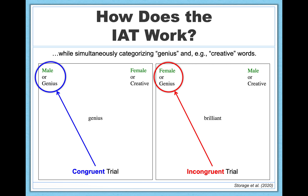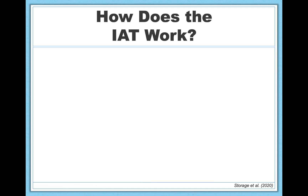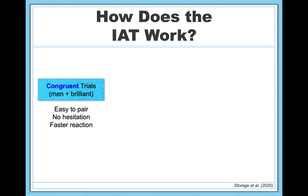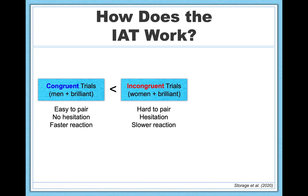This distinction between congruent and incongruent trials is important for the logic of the IAT. If participants find it easier to respond to congruent trials — pairing men with brilliant, or male plus genius — taking less time and making fewer mistakes, compared to incongruent trials pairing women with brilliant or female plus genius, this indicates that participants associate men with the trait of brilliance or genius. The same logic holds for any IAT, although the specific categories used will change. You can apply the same structure to investigate associations related to race, political preferences, and really any other social category imaginable, so it's a really flexible tool.